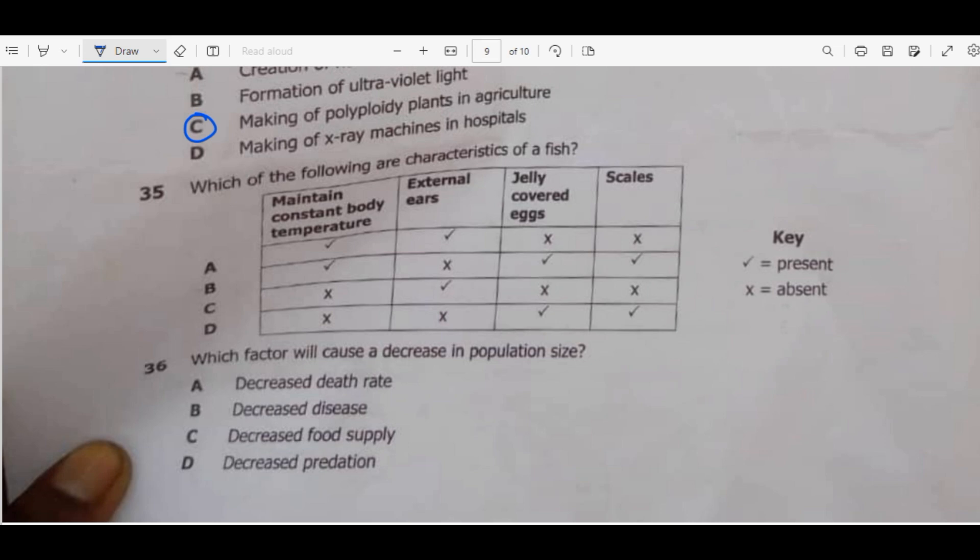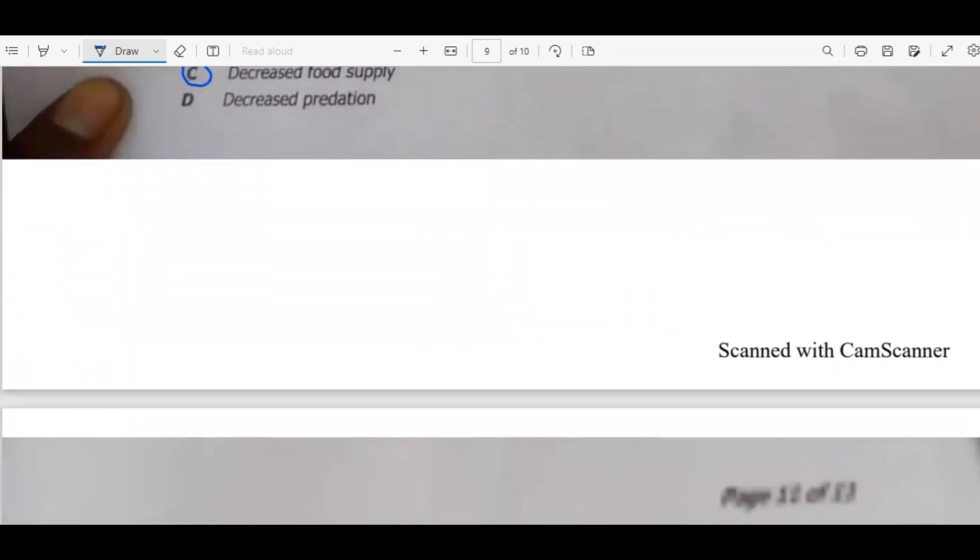Question 36. Which factor will cause a decrease in population size? A, decreased death rate. This one will increase. Decreased disease? No. Decreased food supply? Yes. If there is not enough food, we are expecting the population size to decrease.